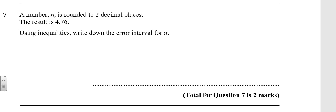Question 7. A number, n, is rounded to two decimal places. The result is 4.76. Using inequalities, write down the error interval.